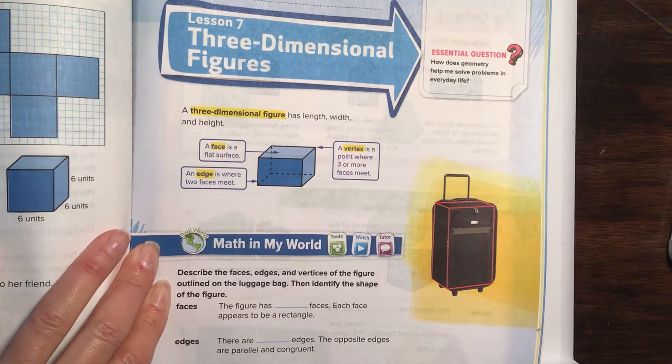Welcome to Math with Mrs. Cox. We are in Chapter 12, Lesson 7, Three-Dimensional Figures, Guided Practice, found on page 941.